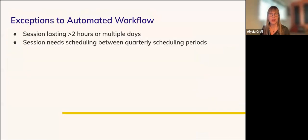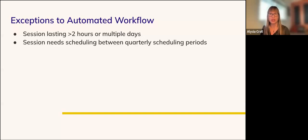There are two exceptions to the quarterly scheduling workflow. The first is for sessions lasting more than two hours or occurring over multiple days — in that case, email the community development team at community@carpentries.org. The second exception is if you need to schedule a session between the close of one quarterly period and the opening of the next. However, we ask that you limit doing this because all the information must then be entered manually by a member of the core team, which can take some time.